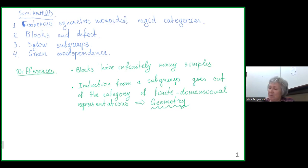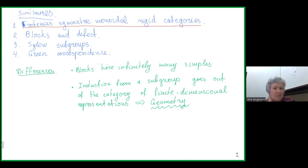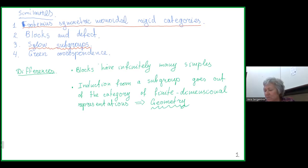The main importance — what makes the similarities work — is the fact that in both cases we work with symmetric monoidal rigid categories which are also Frobenius categories. In both cases we have the theory of blocks and defect, and today I will talk in particular about analogs of Sylow subgroups in the superalgebra case and the analog of Green correspondence.